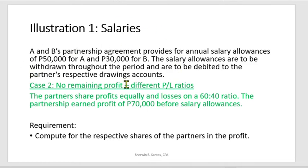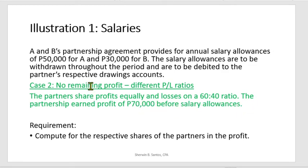Case 2 involves the same problem, but there is no remaining profit and there are different P&L ratios. Partners still share profits equally (50-50) and losses 60-40. The partnership earned a profit of only $70,000 before salary allowances. Since total salaries are $80,000, which exceeds the $70,000 profit, there is no remaining profit — in fact, there is a deficiency.